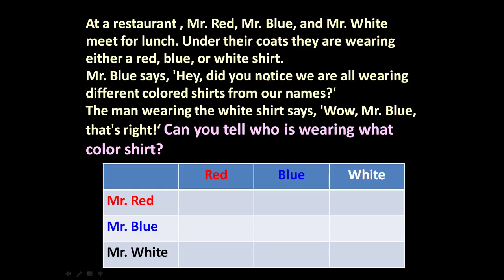Mr. Blue says they are all wearing different colored shirts from their names. It means Mr. Red is not wearing a red shirt, Mr. Blue is not wearing a blue shirt, and Mr. White is not wearing a white shirt — because they are wearing different colored shirts from their names. This is statement one.